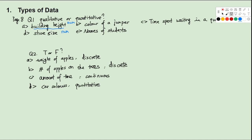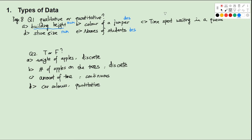Color of jumper — you may have a jumper in white, black, blue, or red, so it's not a number. We use descriptive or qualitative data. Names of students — this is descriptive. Time spent waiting in a queue — waiting 2 minutes, 5 minutes, 1 minute — we use numbers, so this is also numerical.